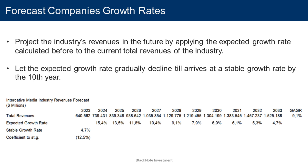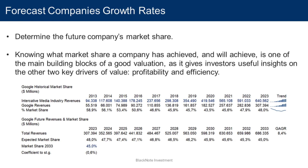First of all, we need to project the industry's revenues into the future — a 10-year time span is often used in company valuation, though not set in stone — to forecast the company's cash flows and after that assume the company will enter its stable growth phase in perpetuity. We start by applying the expected growth rate to the current total revenues of the industry, then let the expected growth rate gradually decline until it arrives at a stable growth rate by the 10th year. The stable growth rate is commonly set as the risk-free rate of the currency in which you are valuing your company.